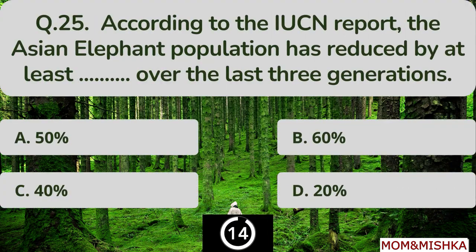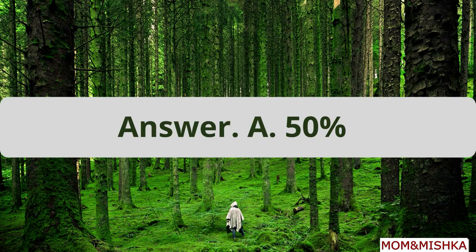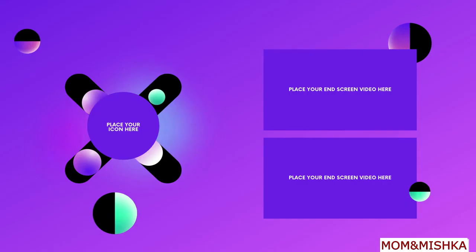According to the IUCN report, the Asian elephant population has reduced by at least blank over the last three generations. The correct answer is Option A: 50%.